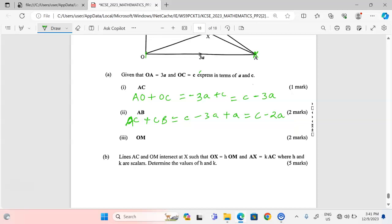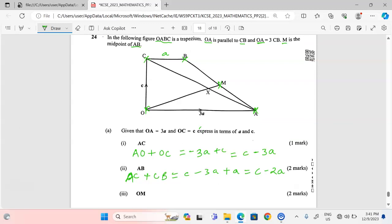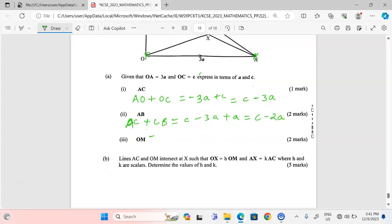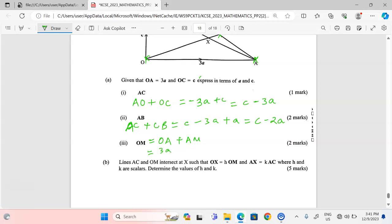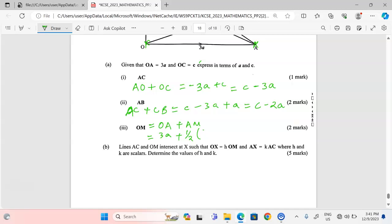We can also talk about OM, vector OM. Vector OM will be given by following the route OA then AM. So vector OM equals OA plus AM. Vector OA equals 3a, plus vector AM.